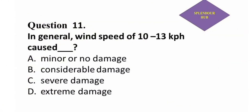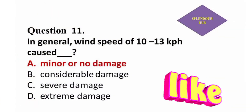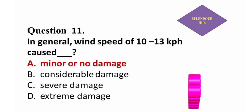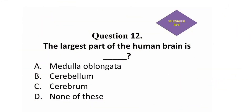Question 11: In general, wind speed of 10 to 13 kilometers per hour causes — option A: minor or no damage, option B: considerable damage, option C: severe damage, option D: extreme damage. Answer: Wind speed of 10 to 13 kilometers per hour causes minor or no damage.